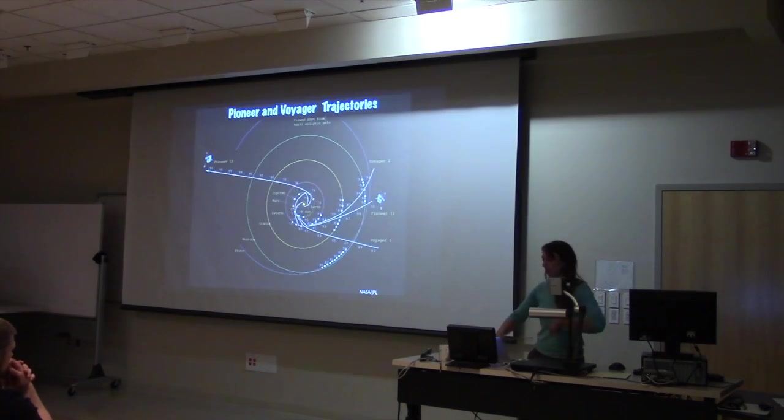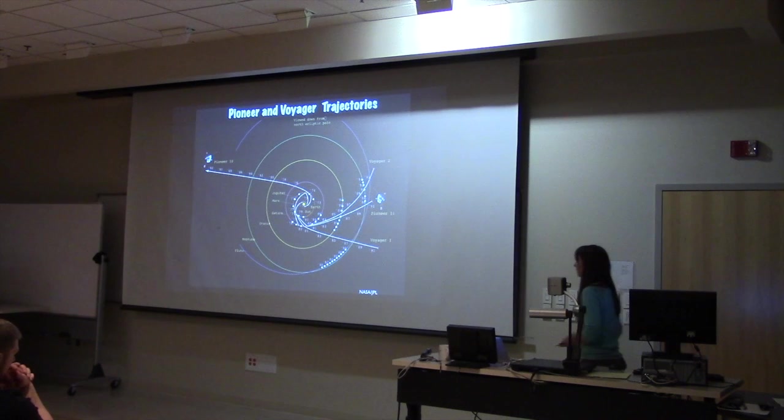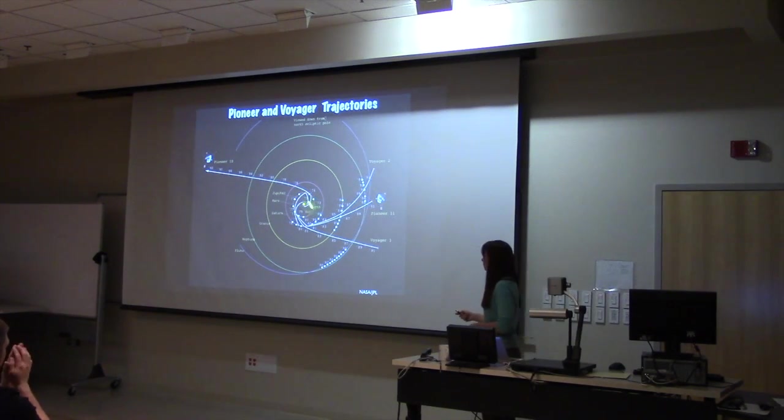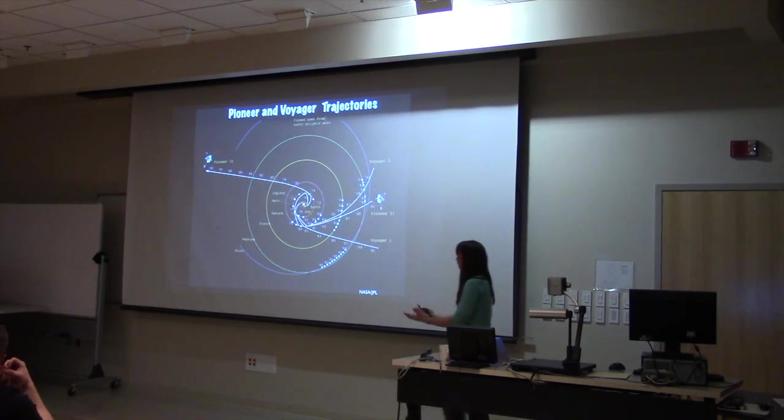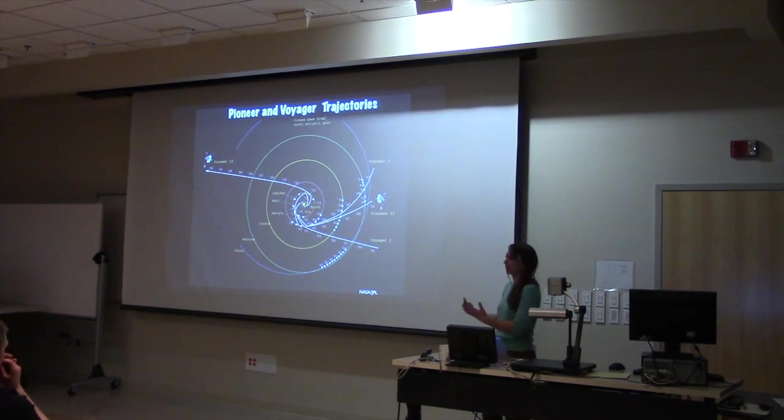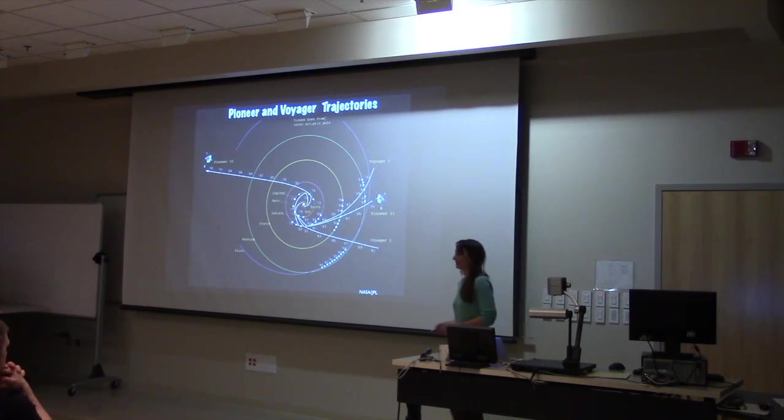But these missions were just really exploratory missions. This is just a figure showing the trajectory of the Pioneer spacecraft and the Voyager spacecraft. These missions, they flew by the outer planets, getting really the first good images that we've ever had.